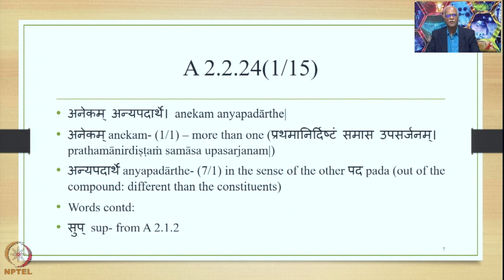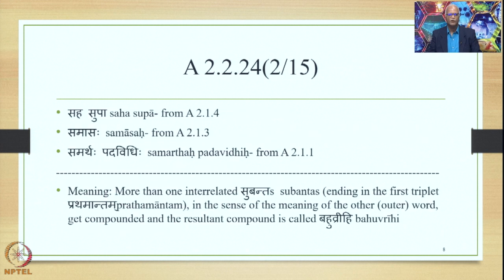The Sutra Anekam Anyapadarthe consists of two Padas. The first is Anekam, which is Prathama Ekavachana 1.1, and by the application of the Sutra Prathama Niradhishtam Samase Upasarjanam, the words in Prathama will become the Upasarjana and occupy the initial position in the Samasa. The second word is Anyapadarthe, Saptami Ekavachana 7.1, meaning in the sense of the Adharapada — the word out of the compound. Words continued are Sup from 2.1.2, Sahasupa from 2.1.4, Samasaha from 2.1.3, and Samarthapadavidhi from 2.1.1.